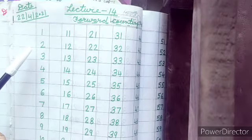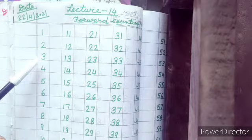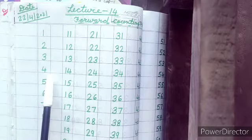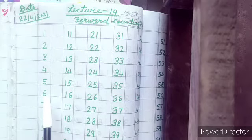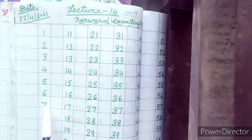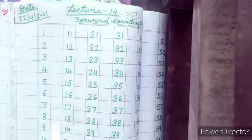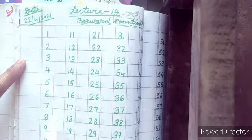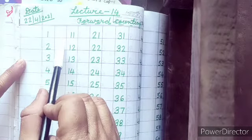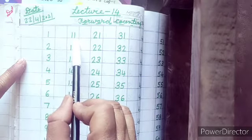Hope you have learnt very well the forward counting. 1, 2, 3, then after 4, then 5, afterwards 6, 7, 8, 9, 10, 11. After completing this line, you have to leave 1 line and from here you can start.